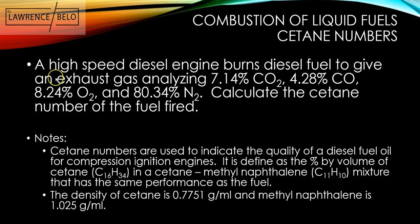The problem goes like this. A high-speed diesel engine burns diesel fuel to give an exhaust gas analyzing 7.14% carbon dioxide, 4.28% carbon monoxide, 8.24% oxygen, 80.34% nitrogen. Calculate the cetane number of the fuel fired.